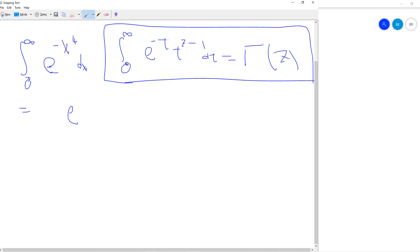And suppose we know that this is the definition of the gamma function from 0 to infinity: exponential negative t, t to the z minus 1 dt. This is gamma of z.